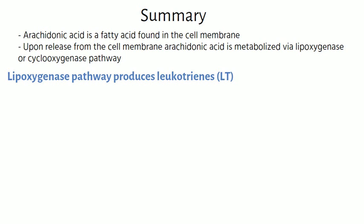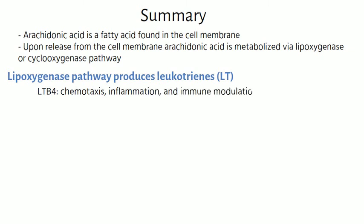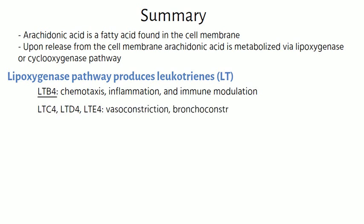The lipoxygenase pathway produces leukotrienes. Leukotriene B4 is involved in chemotaxis, inflammation, and immune modulation. Leukotrienes C4, D4, and E4 are involved in vasoconstriction, bronchoconstriction, inflammation, vascular permeability, and eosinophil recruitment.